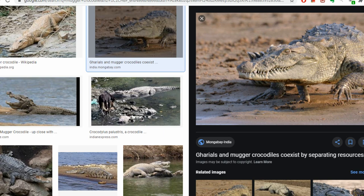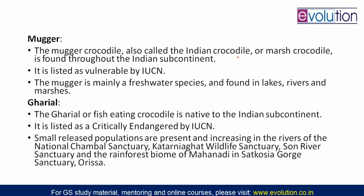The mugger crocodile has a broad snout whereas the gharial's snout is long and narrow like a surahi or ghada. The mugger crocodile lives in marshy land where water and salt are both present at shallow levels, and is found throughout the Indian subcontinent. Its IUCN status is Vulnerable and it is mainly a freshwater species present in lakes, rivers, and marshes.